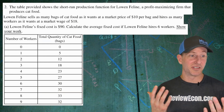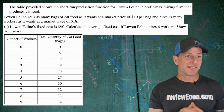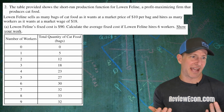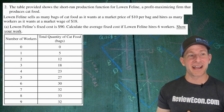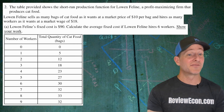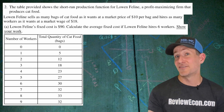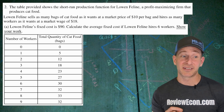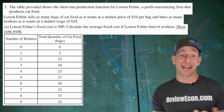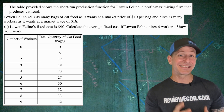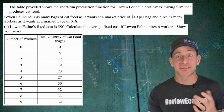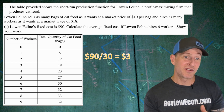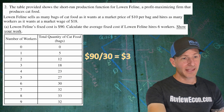On to number two. We have a table showing the short-run production function for Lowen Feline, a profit-maximizing firm that produces cat food. Lowen Feline sells as many bags of cat food as it wants at the market price of $10 per bag and hires as many workers as it wants at the market wage of $18 — essentially selling and hiring in a perfectly competitive market. Lowen Feline's fixed cost is $90. We're going to calculate the average fixed cost if they hire six workers. At six workers, 30 bags are produced, so $90 divided by 30 gives an average fixed cost of $3. Make sure you show your work.